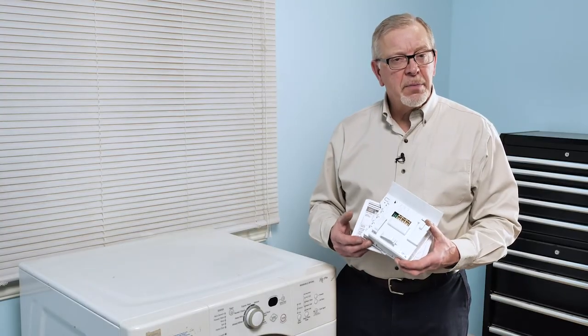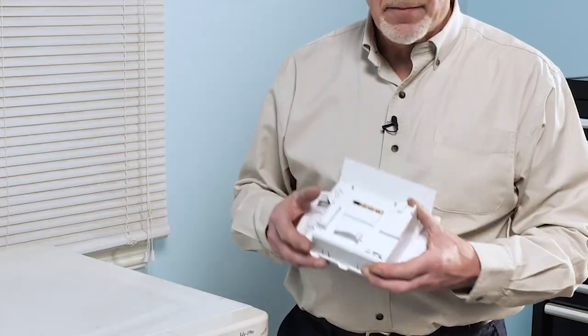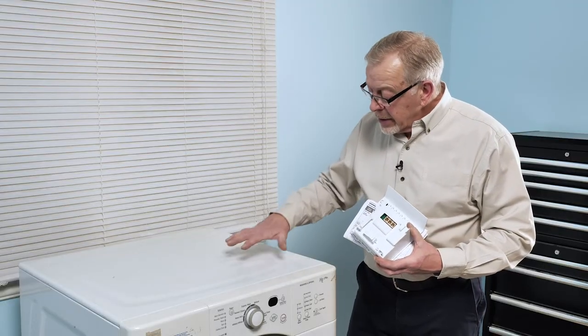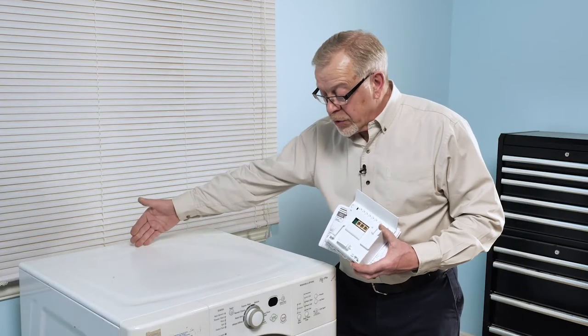Although not as common, the next component to suspect for a no spin condition is the main control board. It's typically located in underneath the main top, either located along the side panel or towards the back.